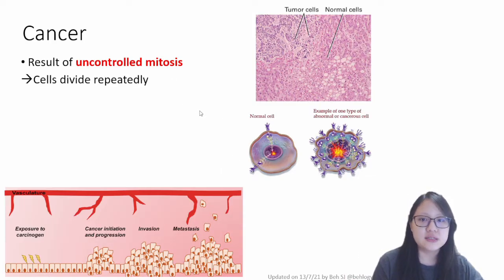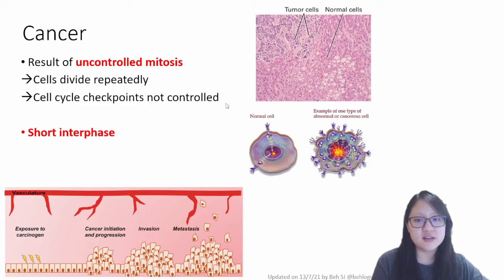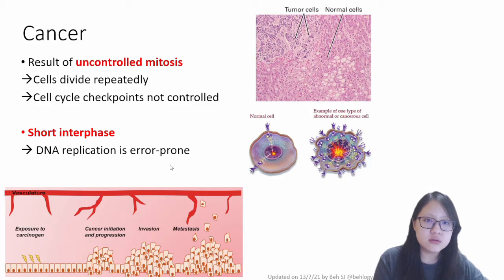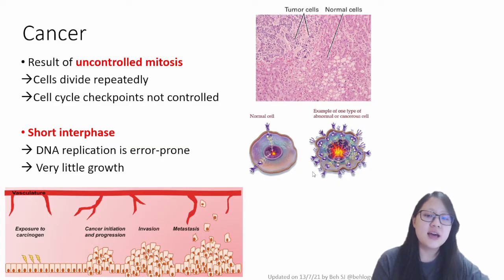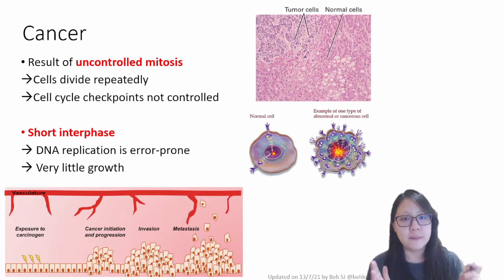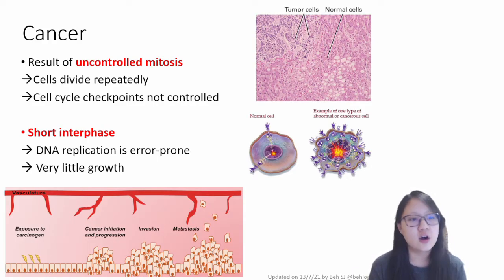What happens in uncontrolled mitosis? Cells divide repeatedly; cell cycle checkpoints are not controlled and therefore there's no DNA repair. There will be a very short interphase — the S phase is very short and G2 is also very short — so DNA replication is error-prone and there is very little growth. Cells grow a little bit but divide very quickly: short interphase, very frequent mitosis. So it's uncontrolled mitosis at a rapid and repeated rate that causes cancer.